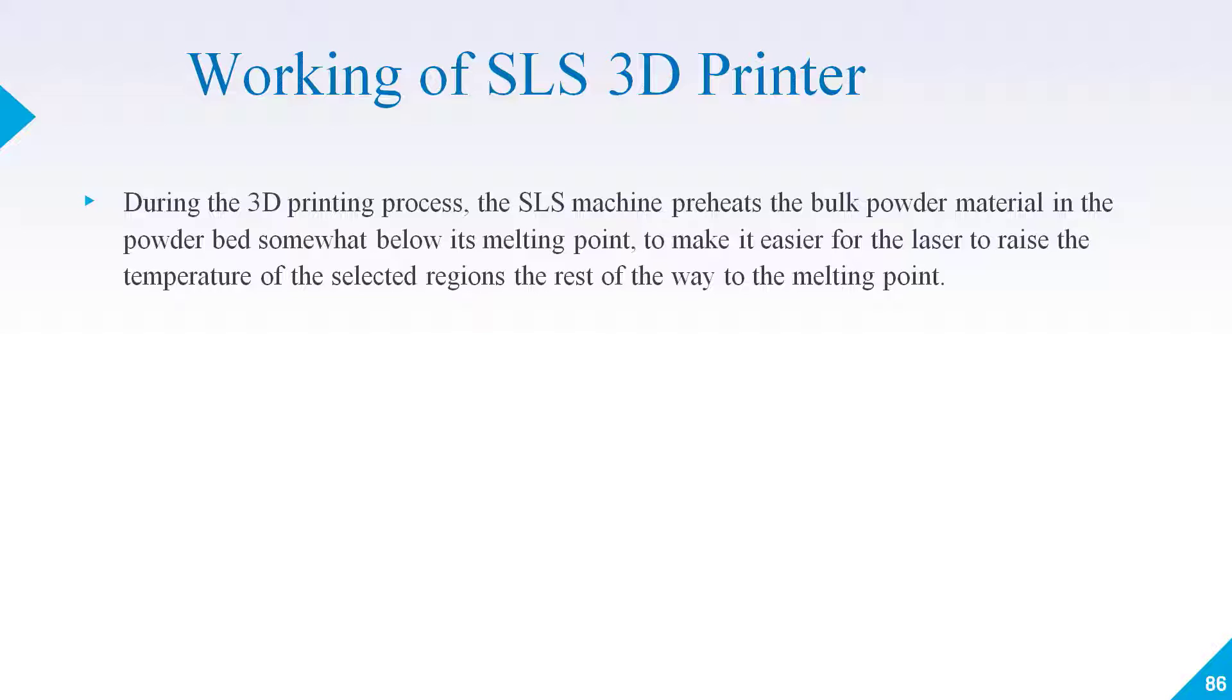What they do in SLS 3D printing is preheat your raw material. Suppose the melting point is 1000 degrees C, then they will preheat it to approximately 700 degrees C. Once your laser strikes the powder, the powder will deform and fuse easily because we have preheated it.